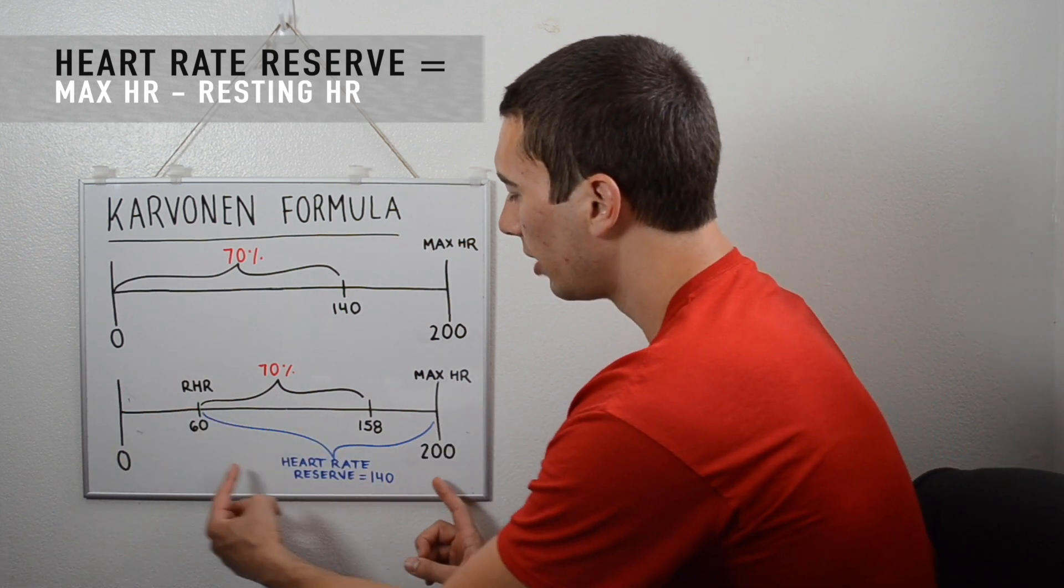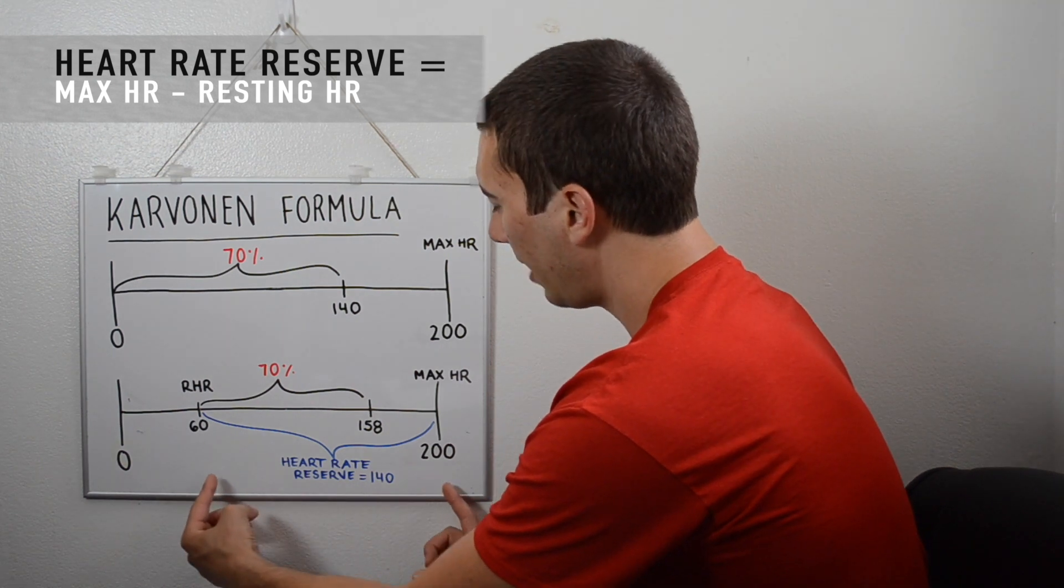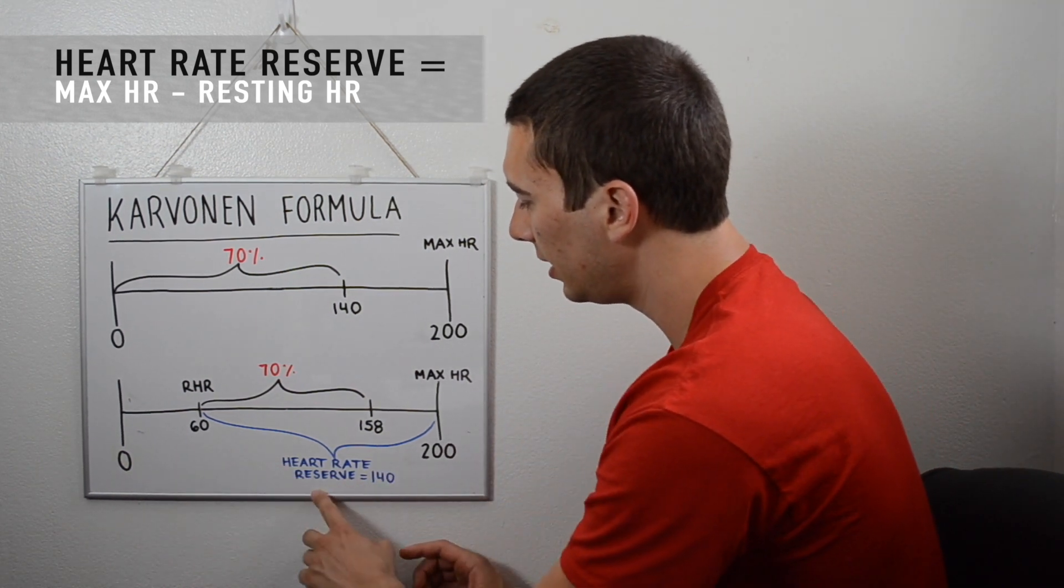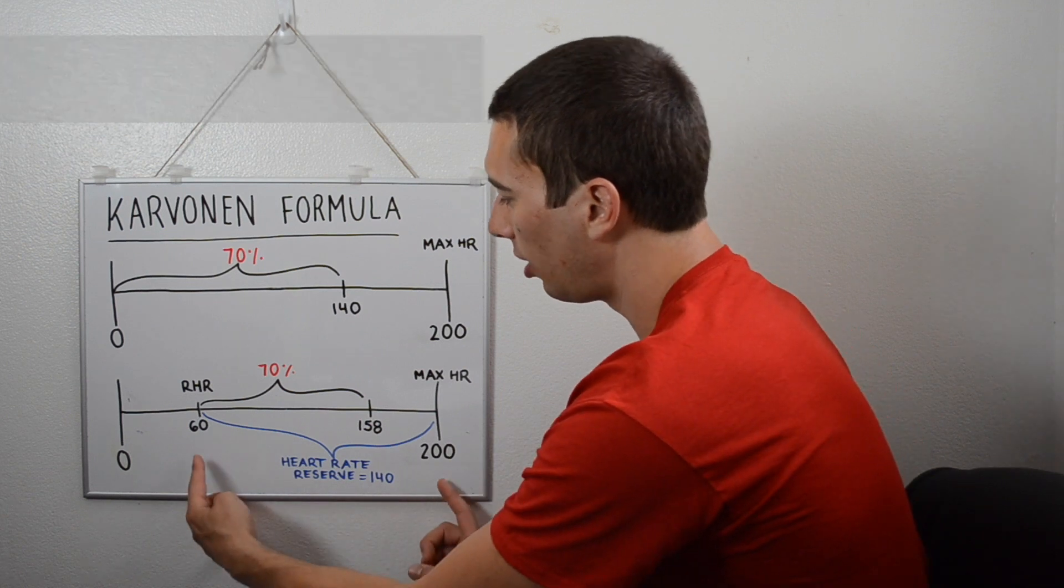So we call this range between your resting and your max the heart rate reserve. And in this case, it's 200 minus 60 to get 140 beats per minute for that heart rate reserve.